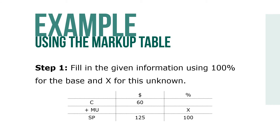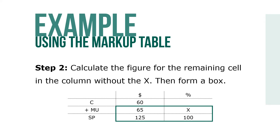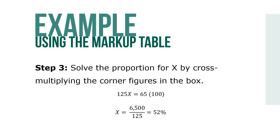We can also use a table to fill in the given information, using 100% for the base and X for the unknown. Calculate the figure for the remaining cell in the column without the X, then form a box. Solve for the proportion for X by cross-multiplying the corner figures in the box. In this case, 125X equals 65 times 100, so X equals 6500 over 125, which equals 52%.